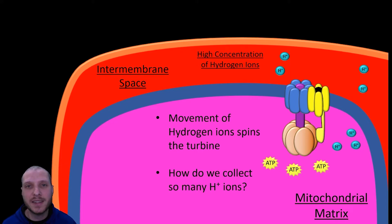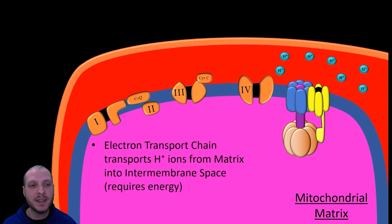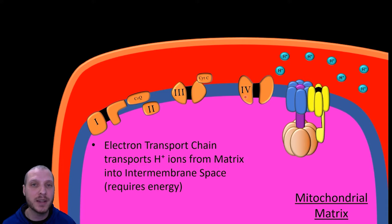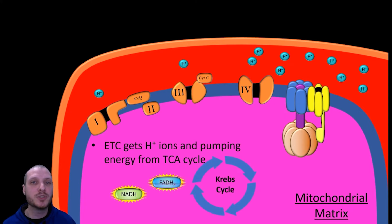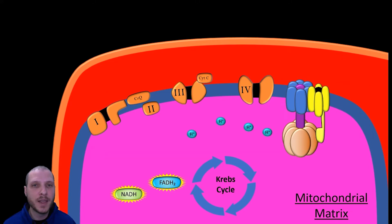The next problem is how we collect and concentrate all these hydrogen ions in the intermembrane space. To show this, we introduce the electron transport chain, which has multiple components referred to as complexes — Complex I, Complex II, Complex III, and Complex IV. These complexes have openings within the membrane that allow them to move hydrogen ions from the mitochondrial matrix into the intermembrane space. To do this, we need a supply of energy — and this is where the Krebs cycle comes in, producing energy-rich molecules that power these proton pumps.